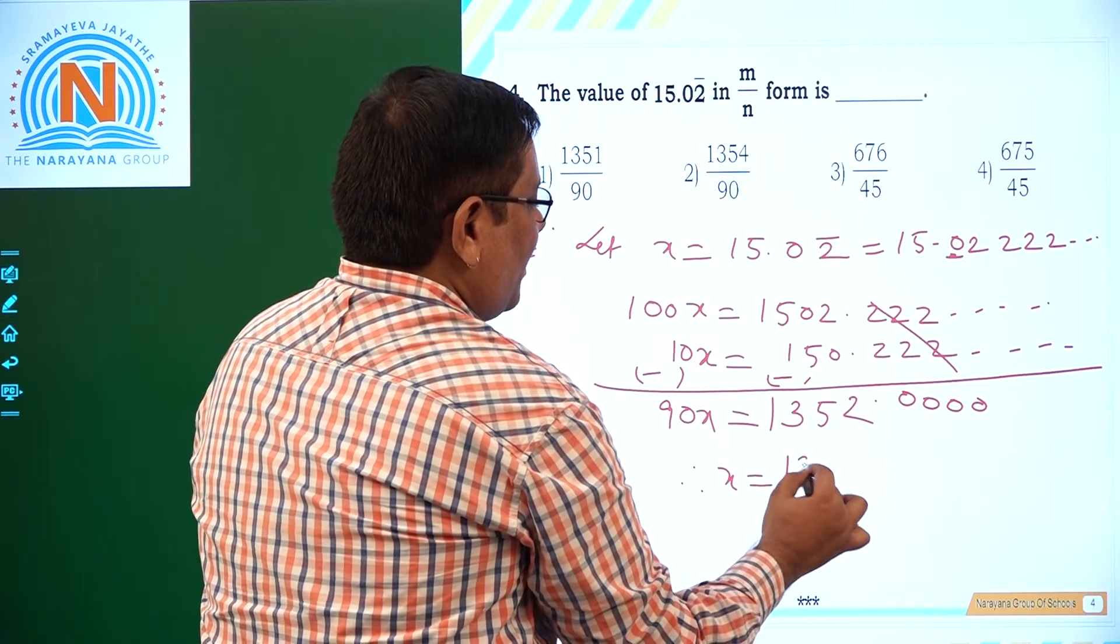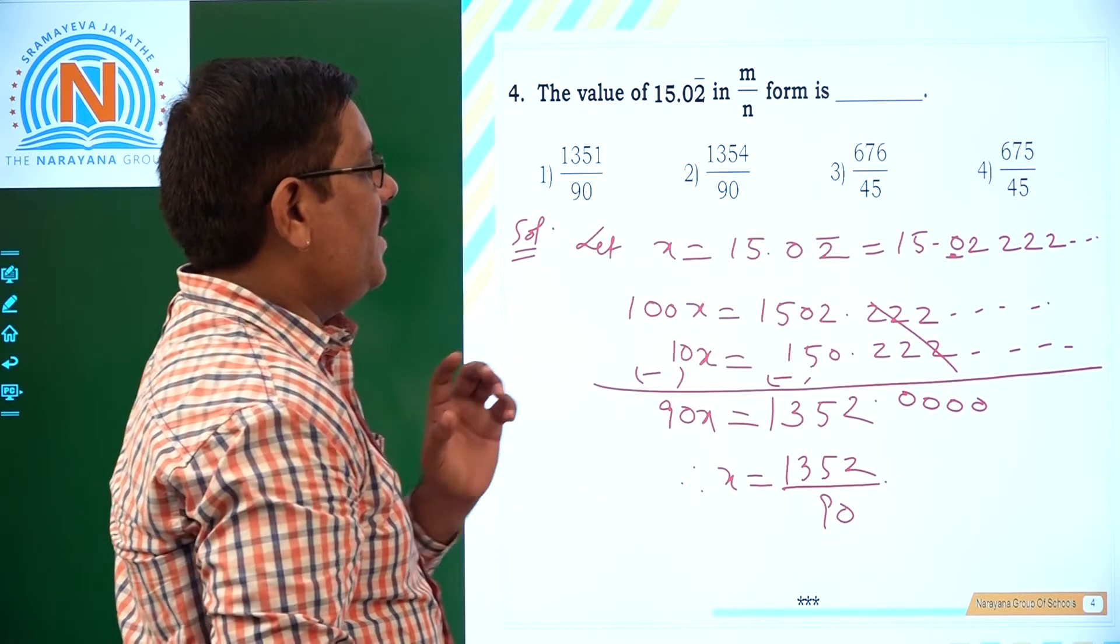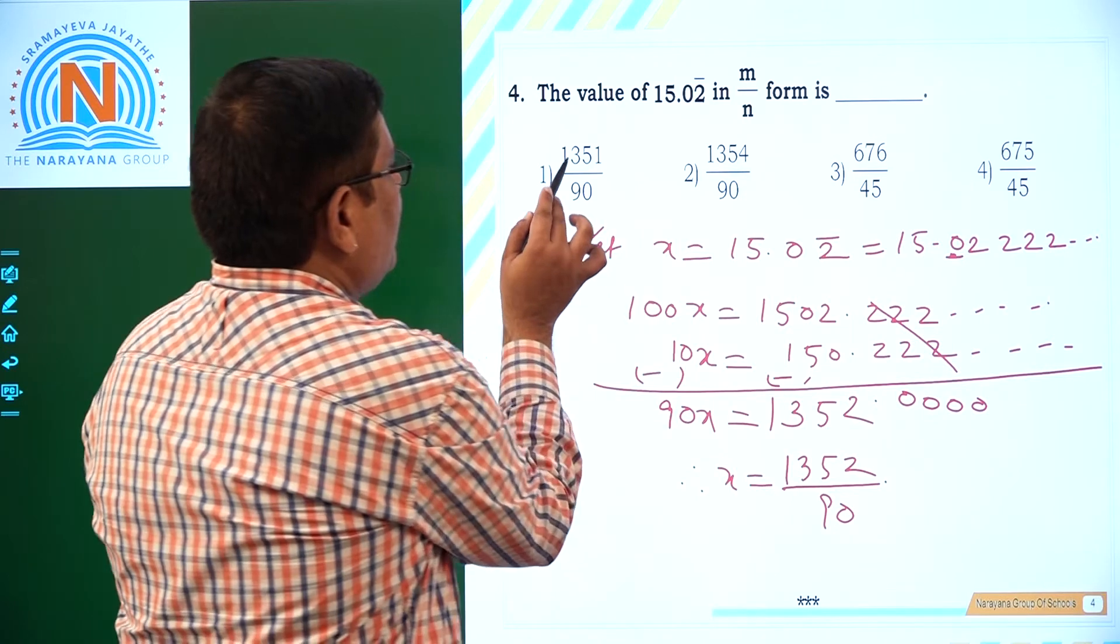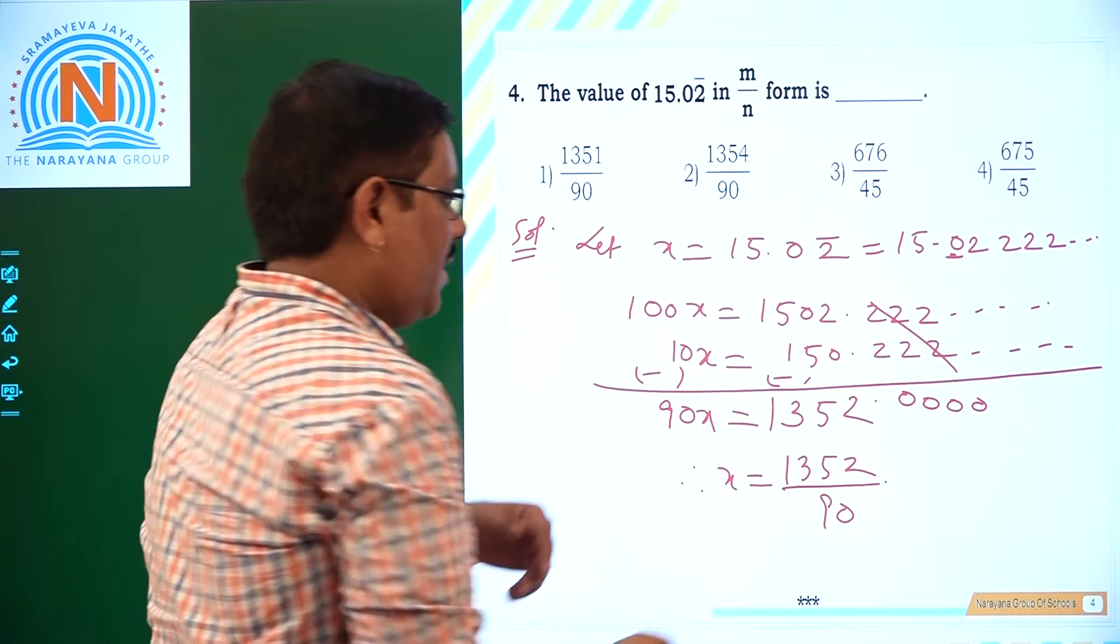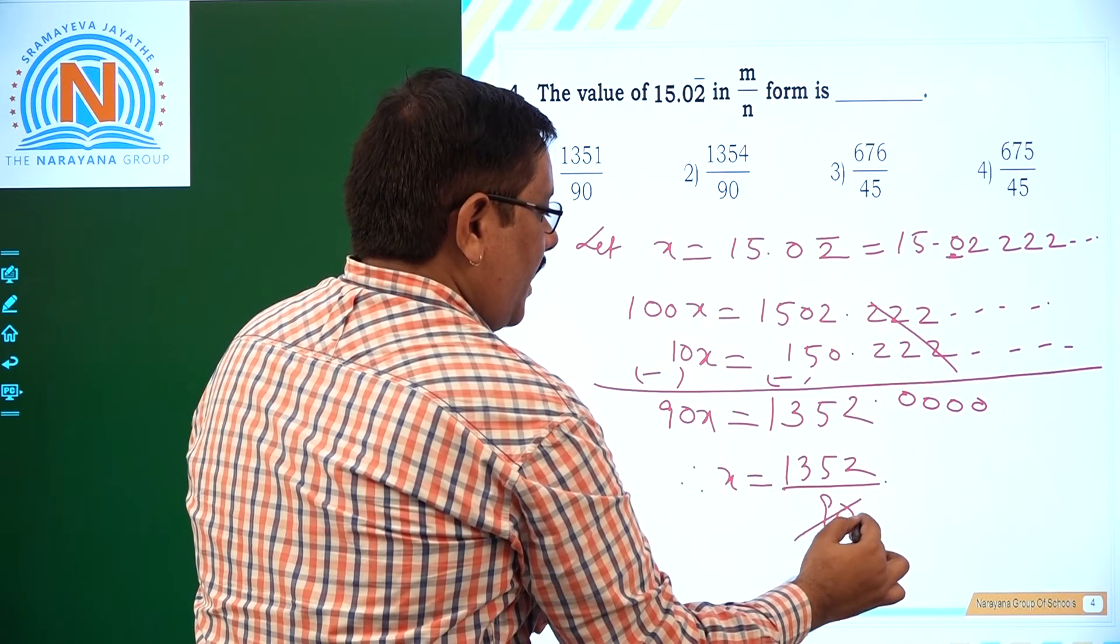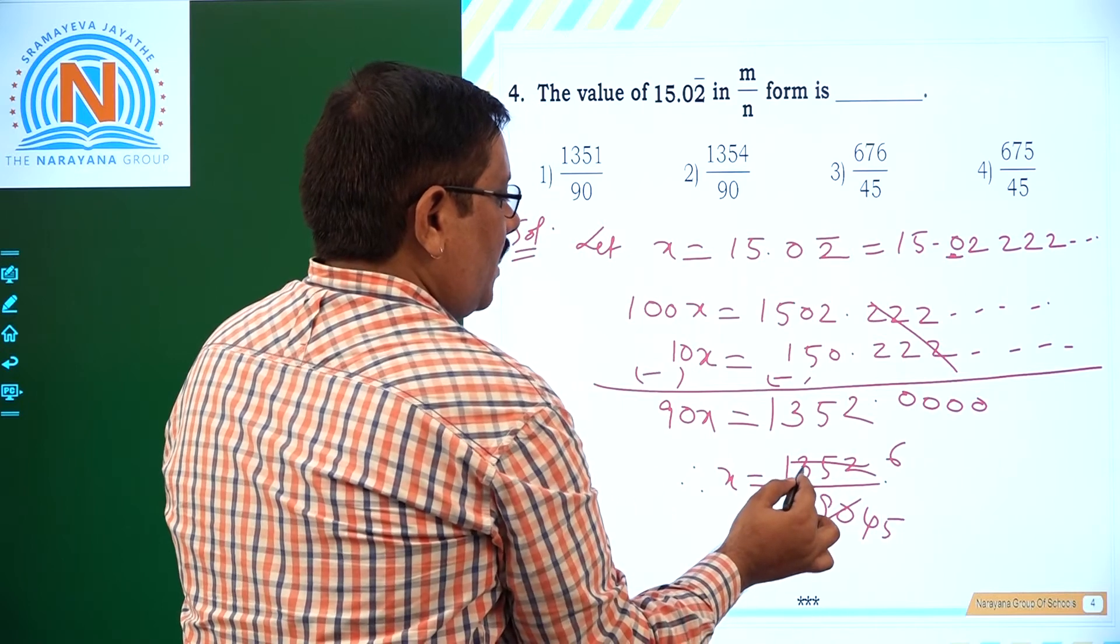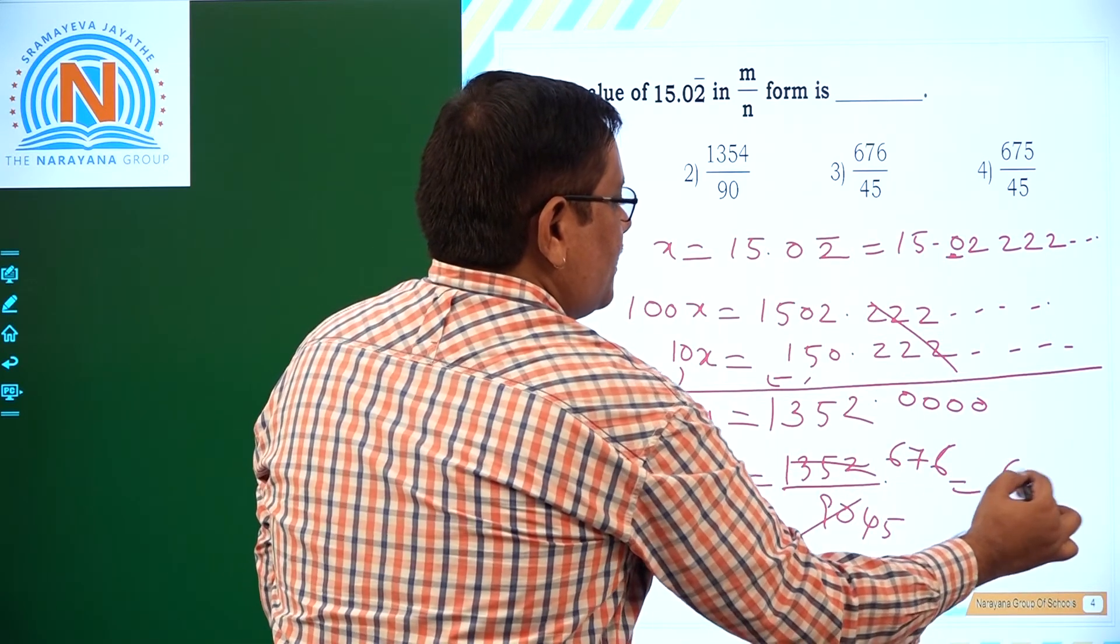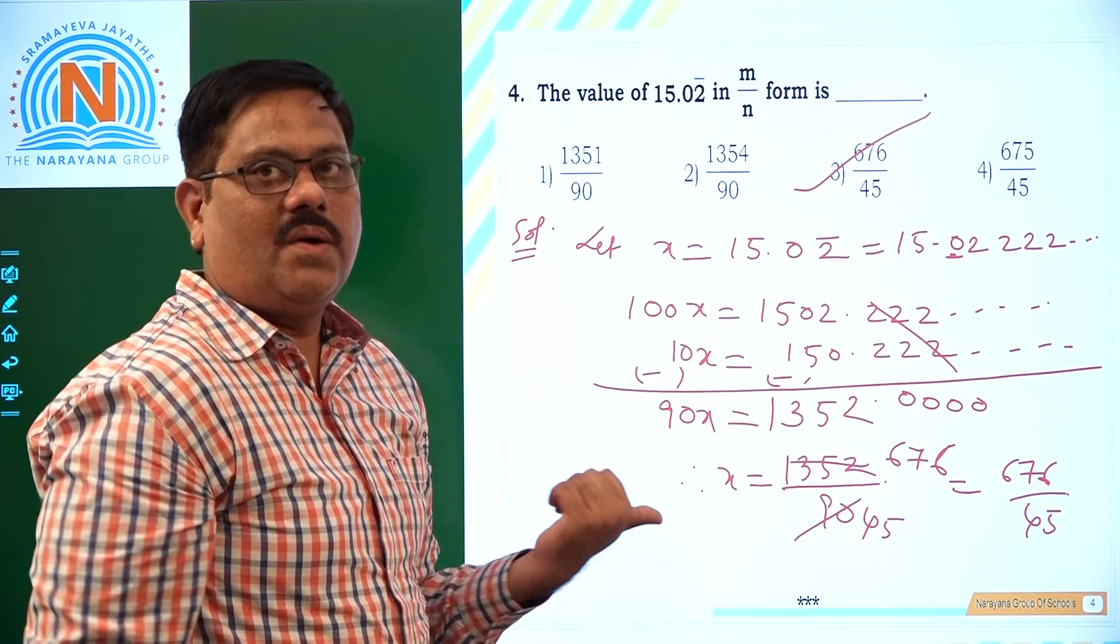Therefore, what is the value of x? 1352 by 90. 1352 by 90 is nothing but third option. Now we have to see, this is 1351 by 90, 1354 by 90, 676 by 45. It may be simplified. See? This is 45, 2's and here it is. 6 times 2 is 12. 7 times 2 is 14. And 6 times. So this is otherwise 676 by 45. We have this answer. That is nothing but third option.